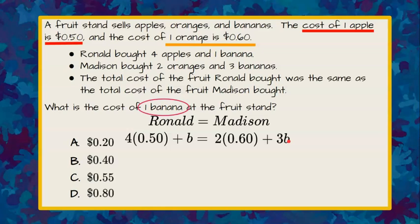We don't know the cost of a banana. We only know the cost of the apples Ronald bought and the cost of the oranges Madison bought. But Ronald bought one banana and Madison bought three bananas, so three times the cost of one banana.